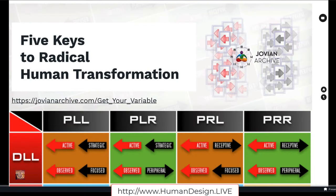This presentation is called Five Keys to Radical Human Transformation. Variable is an advanced area of the Human Design system which offers you an in-depth look at your cognitive design and your uniqueness. This is going to show you a clear, precise, and practical map for the transformation of your awareness and how you experience your life. Some people might call this not just awareness, but actually enlightenment.